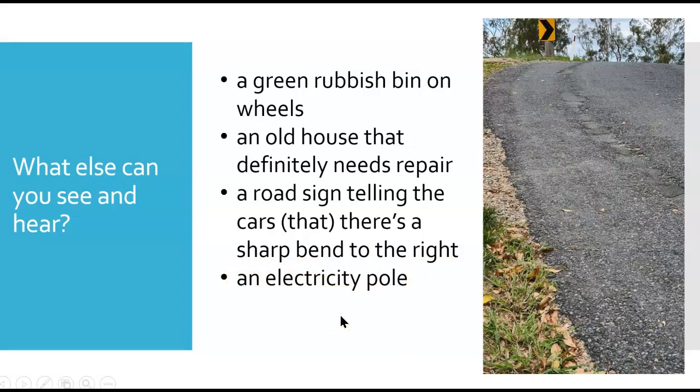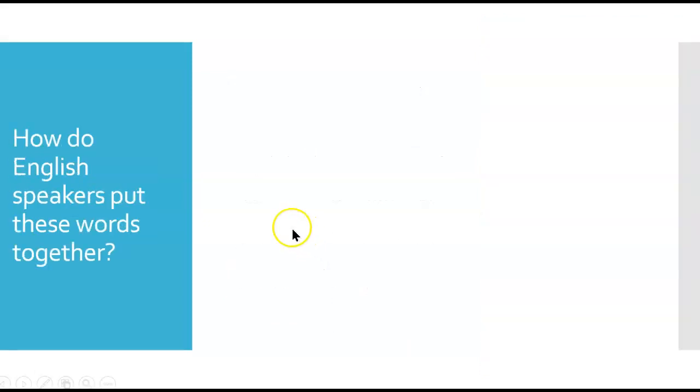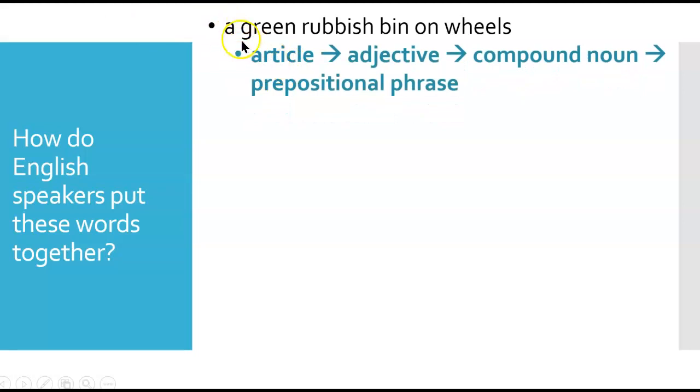How did these go together? A green rubbish bin on wheels starts with an article 'a', adjective 'green', rubbish bin compound noun, and 'on wheels' is a prepositional phrase.